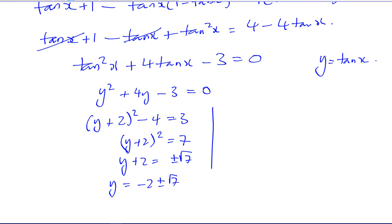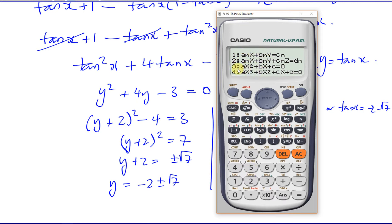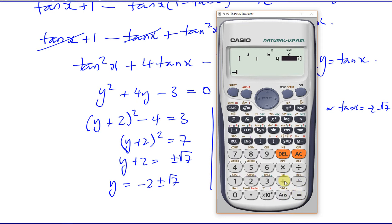So y + 2 equals plus or minus the square root of 7, meaning y equals minus 2 plus or minus root 7. So tan(x) is either minus 2 + √7 or tan(x) is minus 2 − √7. We can verify using the quadratic solver on the calculator with a = 1, b = 4, c = −3, which confirms the solutions minus 2 + √7 and minus 2 − √7.